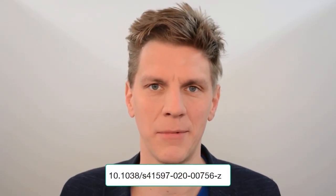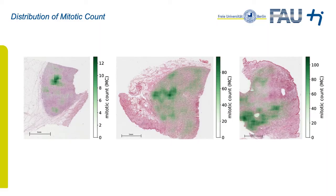You might ask where these annotations come from. They come from a dataset that we published around a year ago as open data. With this, we're now able to investigate the mitotic count or density of mitotic figures on the complete microscopy slide. If we do that, we see that it's actually quite patchy, which means that the region of interest selection is in fact very relevant.